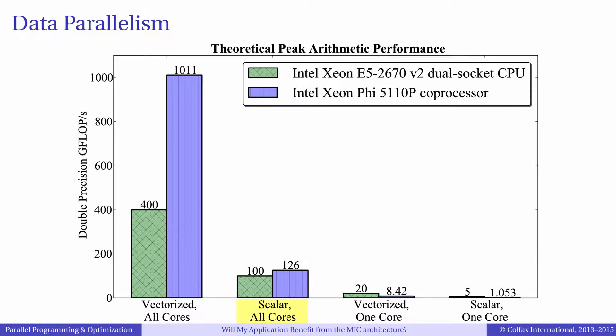Without vectorization, the theoretical peak performance for double precision on Xeon Phi coprocessor is only 126 gigaflops per second, which is only marginally better than the Xeon processor's scalar performance. Those numbers are quoted for the Intel Xeon Phi 5110P coprocessor and the Xeon E5-2670 v2 processor, also known as Intel Ivy Bridge. Thus, for an application to benefit from the MIC architecture, it must be able to take advantage of vectorization.